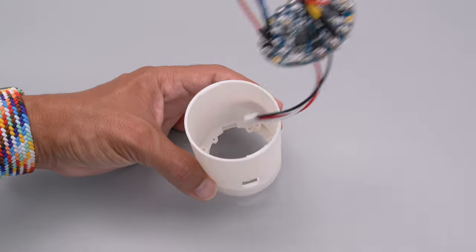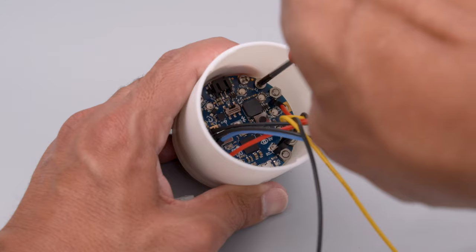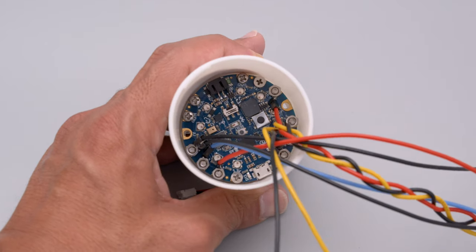The Circuit Playground is fitted into the enclosure with the USB port lined up with the cutout. It's secured to the available mounting holes using M3 screws.